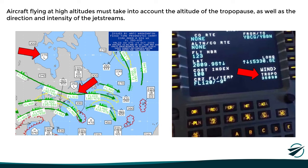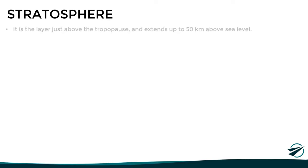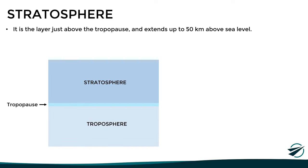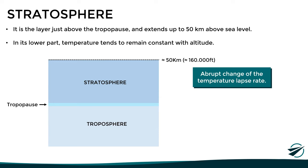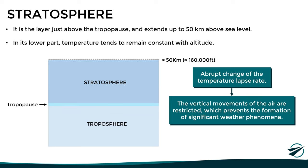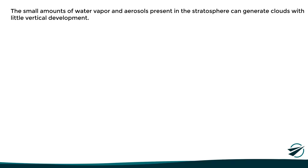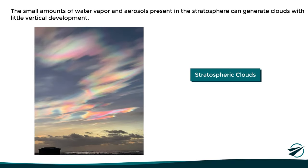Now that we have seen the most important facts about the tropopause, let's move on to the stratosphere. This layer is found just above the tropopause and extends up to an altitude of 50 kilometers or 160,000 feet. In its lower levels, temperature tends to remain constant with altitude, and this abrupt change of the temperature lapse rate restricts the vertical movement of the air, which in turn prevents the formation of significant weather phenomena in this layer. However, the small amounts of water vapor and aerosols present in the stratosphere, combined with the low temperatures, can generate clouds with little vertical development known as stratospheric or nacreous clouds, due to their particular and bright colors.